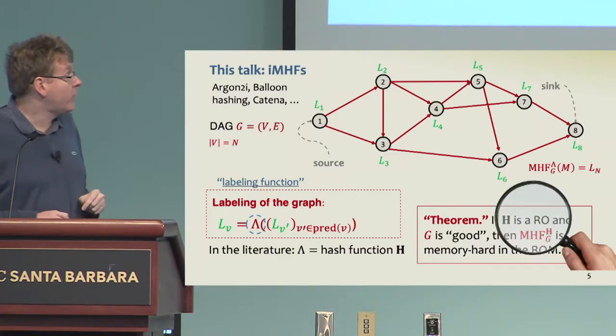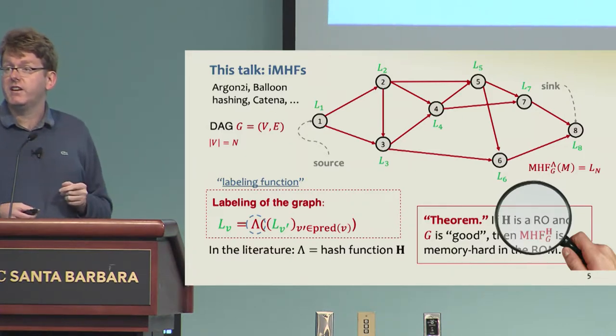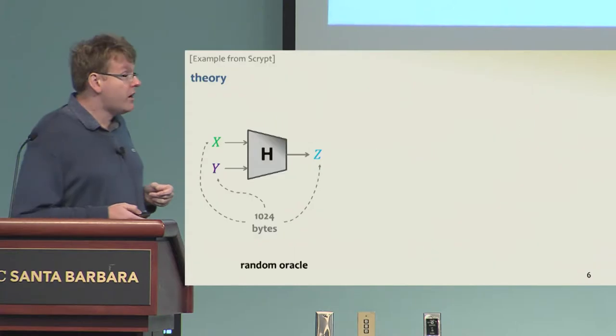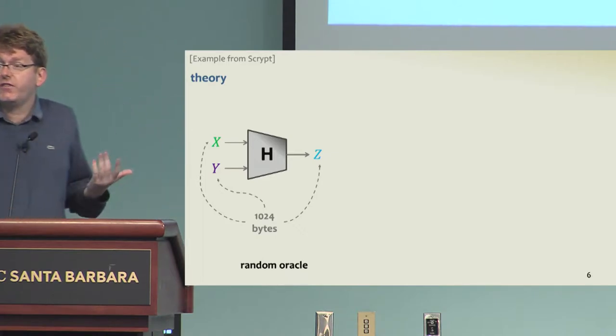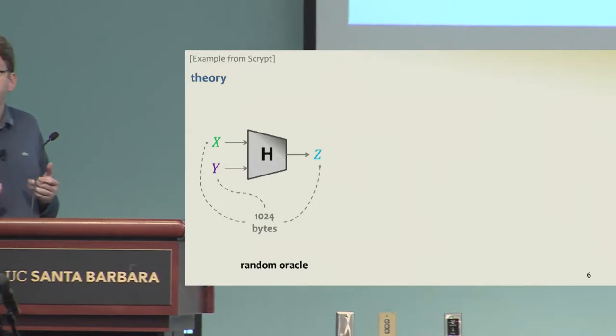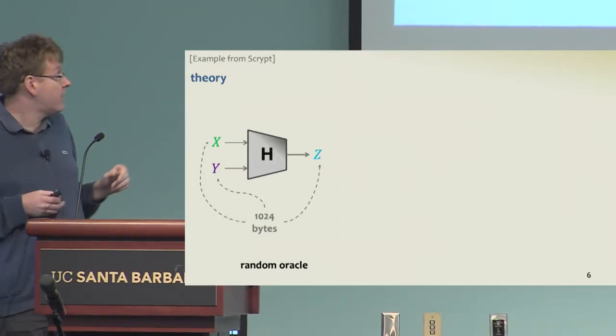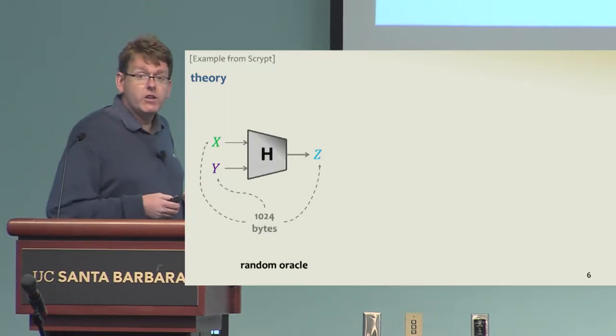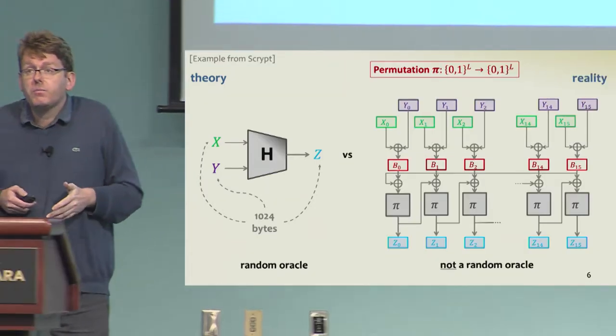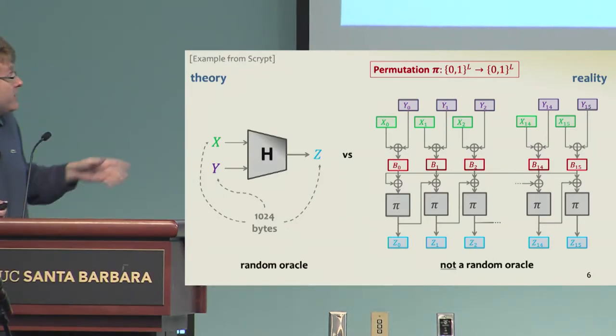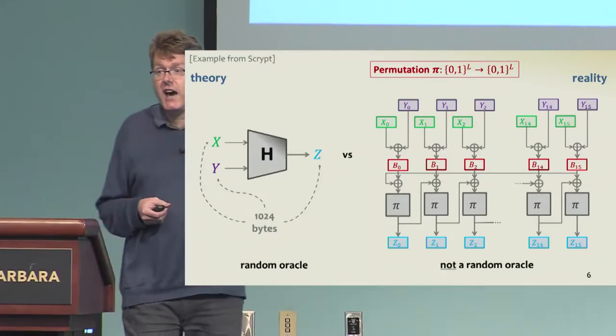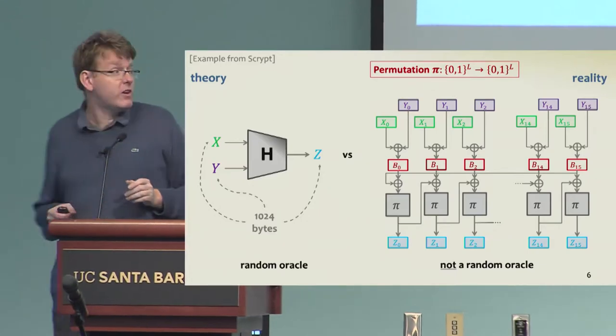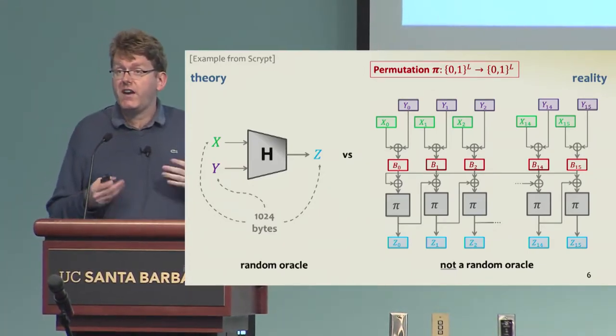We want to have a closer look at this assumption that the labeling function is a random oracle. In particular, if you look at concrete instantiations of memory hard functions, what we see is that the labels are usually very large, thousands of bits. It's already very hard to use an off-the-shelf hash function. What designers do instead is they come up with ad hoc constructions, usually based on some underlying primitive. Here it's a permutation.